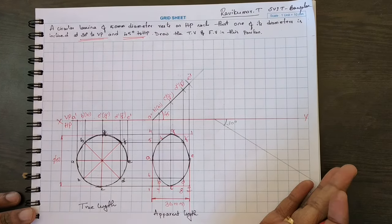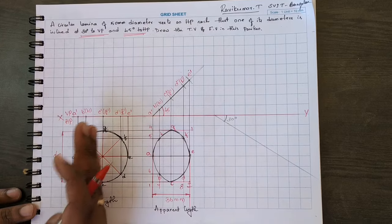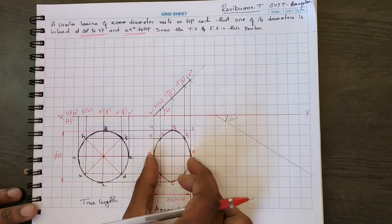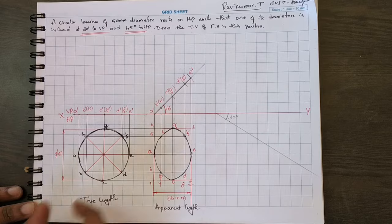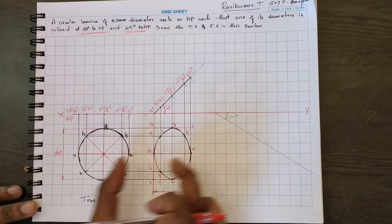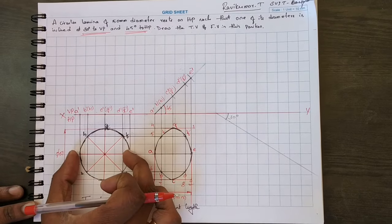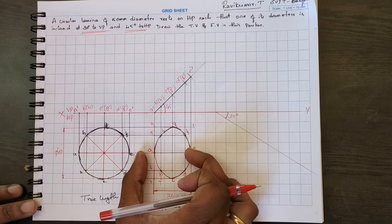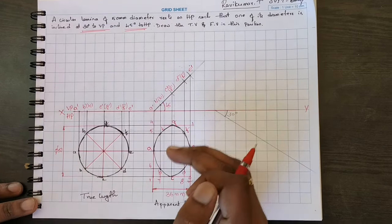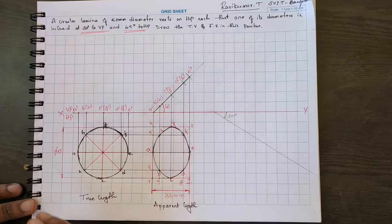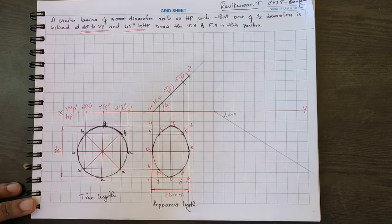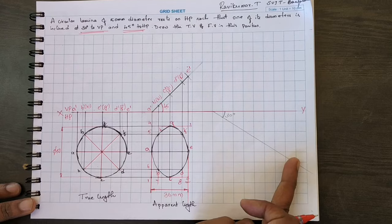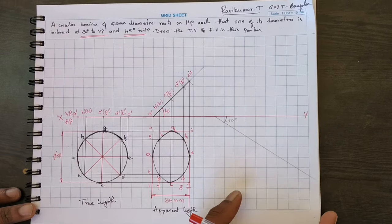Why do you need to find the locus? From the first true length and apparent length, you can observe that the diameter of the circle is reduced. A to E is 50mm here but it becomes 36mm, so it is reduced. To see how it looks in the front view, we need to find the locus or beta angle.